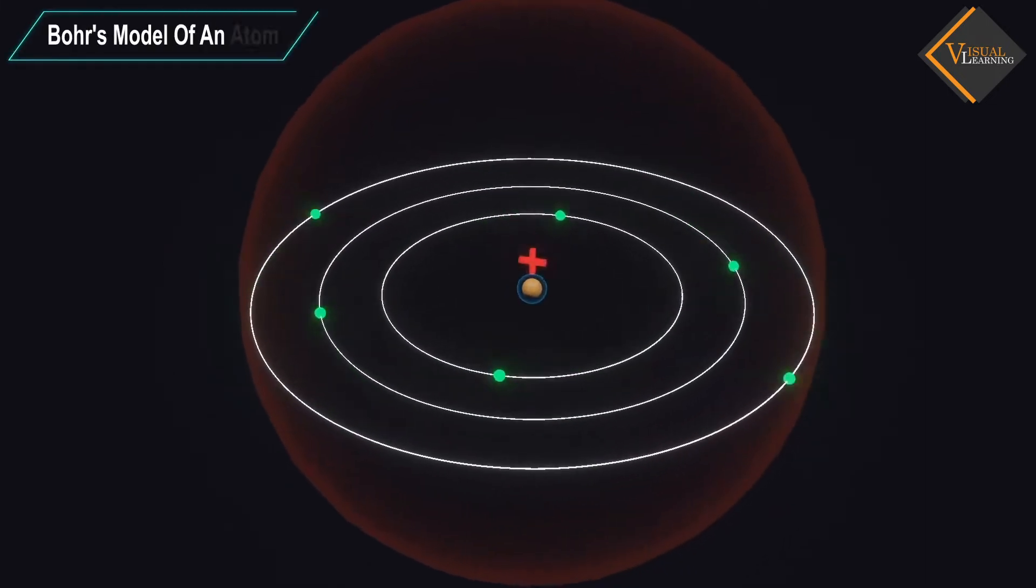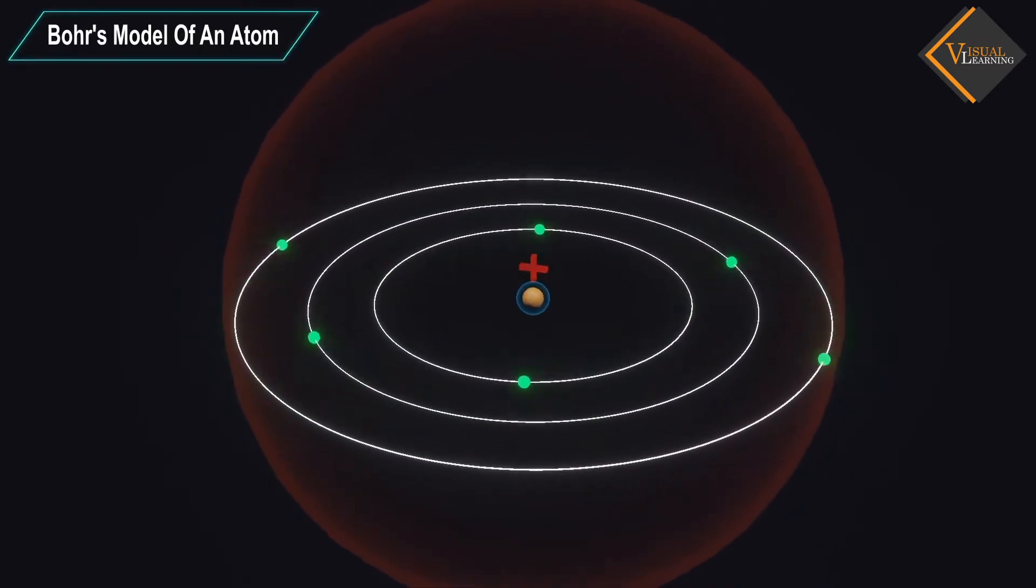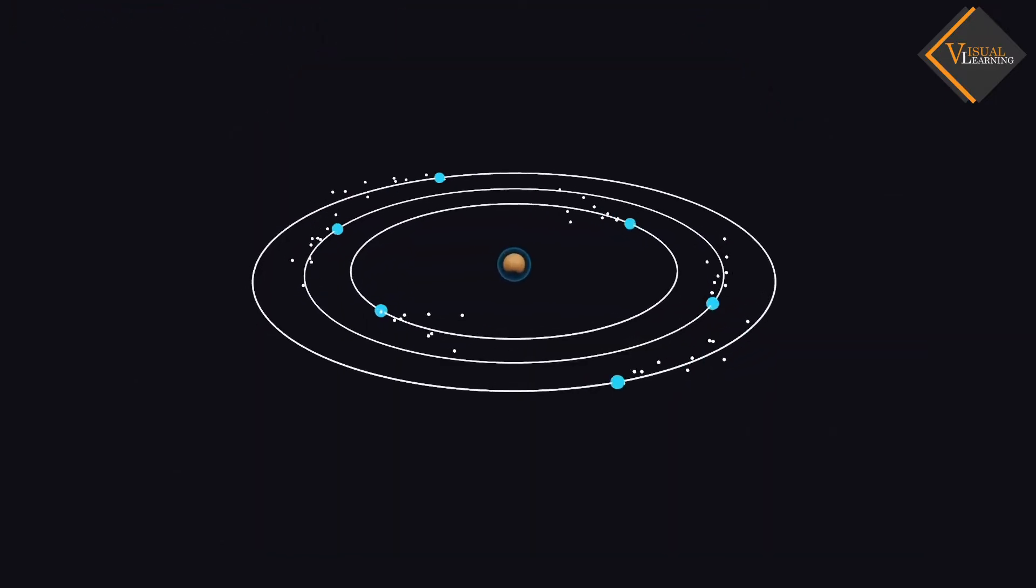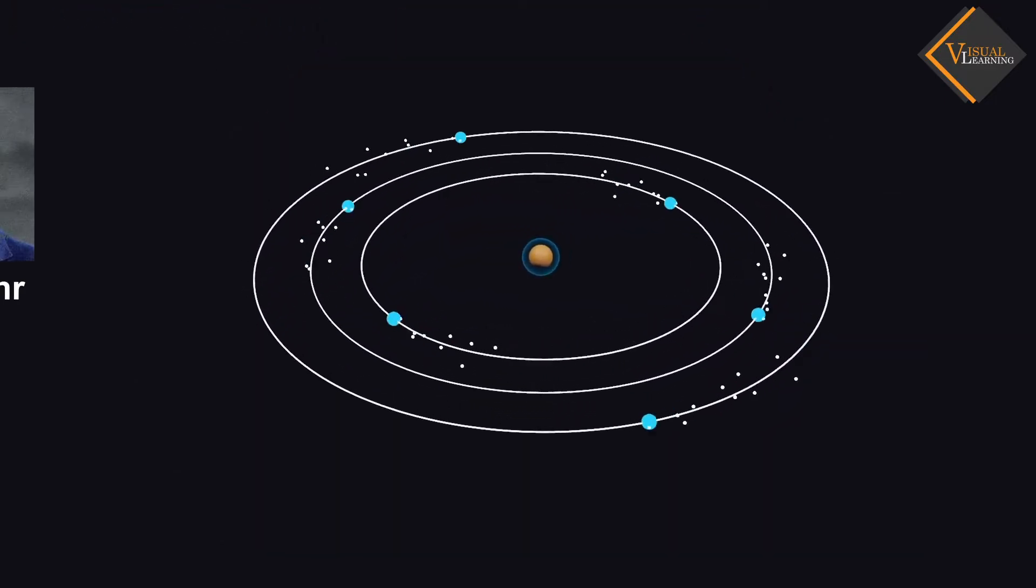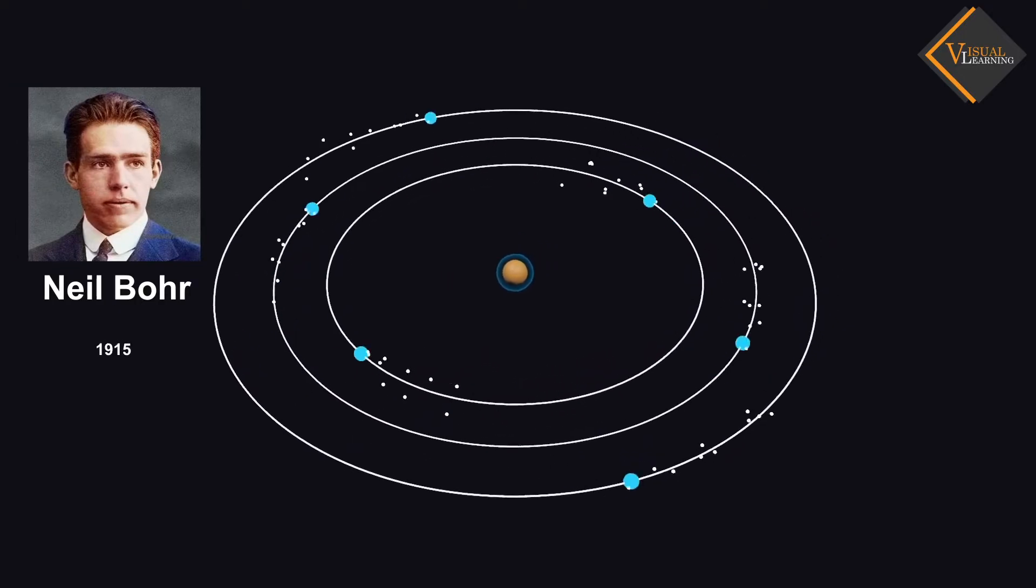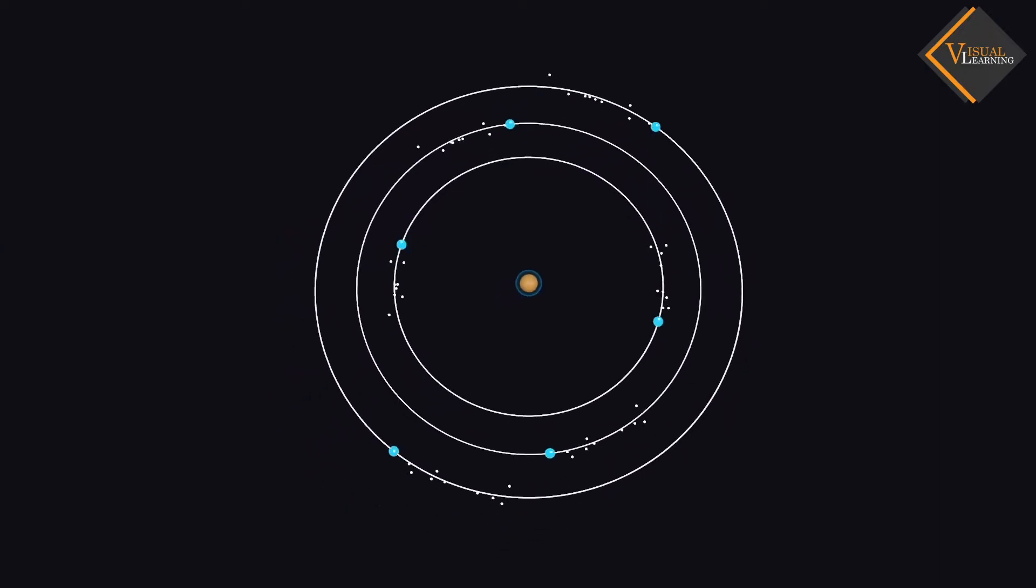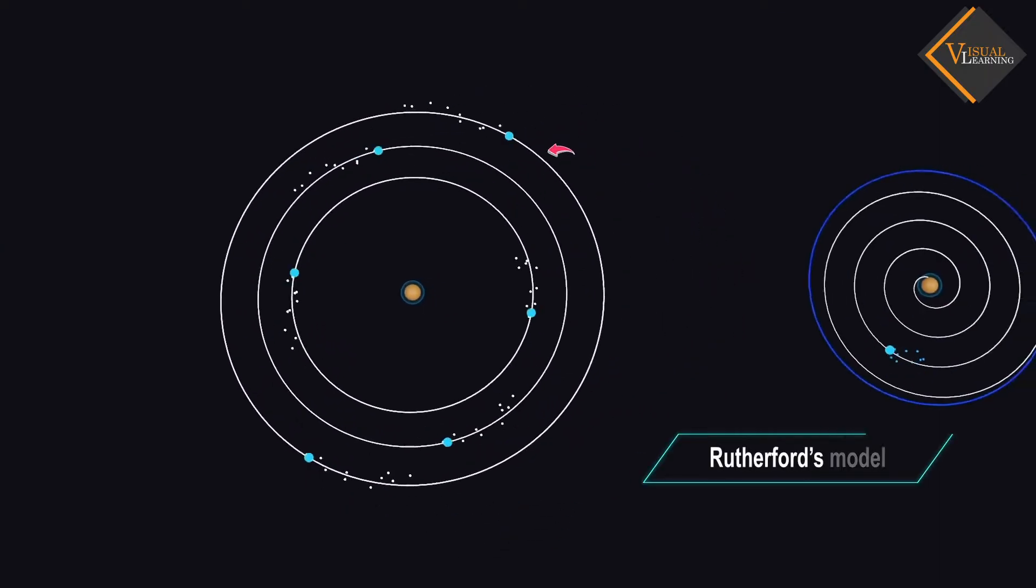In this video, we will understand Bohr's model of an atom. The Bohr's model of the atom was proposed by Neil Bohr in 1915. It came into existence with the modification of Rutherford's model of an atom.